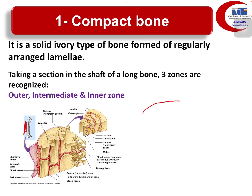Compact bone is also found in the outer and inner tables of flat bones, like the skull. If we take a section of the skull bones, we can notice that compact bone occupies the outer and inner surfaces or tables of the skull bone. Finally, compact bone covers short bones like the vertebrae and ribs. So the sites of compact bone are: shaft of long bones, outer and inner surfaces of flat bones like the skull, and the outer coverings of short bones like the vertebrae and ribs.